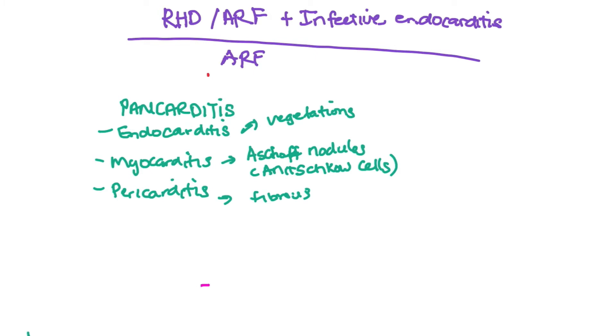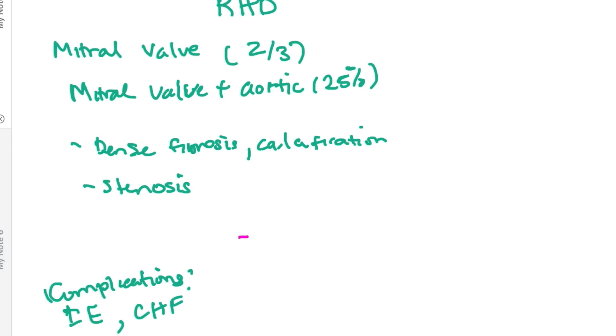Rheumatic heart disease is when there's permanent damage to the valve causing deformation. You can also have MacCallum plaques present, usually in the left atrial walls. The valve most often affected is your mitral valve in two-thirds of patients, and in 25% of patients you have both the mitral valve and the aortic valve involved.